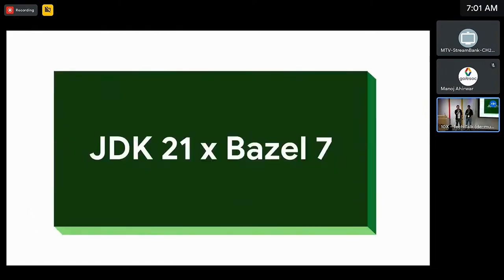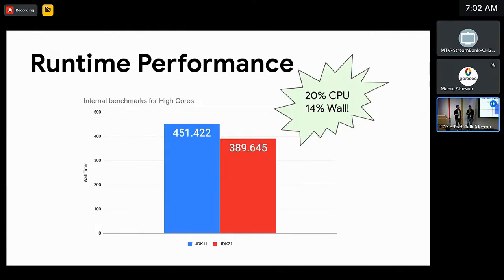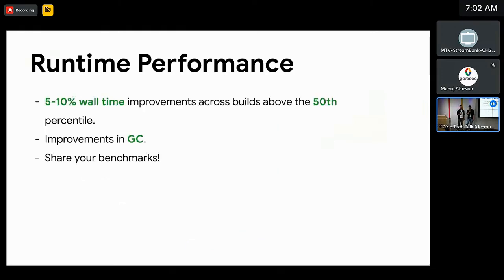As Toby mentioned yesterday, one of the changes we have made in Bazel 7 is we have finally upgraded the embedded JVM to 21 from 11. We have been benchmarking the performance implications of this upgrade and seen some quite promising results. From our internal benchmarks, we've seen improvements of up to 20% for CPU and 14% for wall time. However, this was only for high-core machines — we didn't see improvements in low-core machines. In some of our experiments in production, we've seen a 5% to 10% wall time improvement across builds above the 50th percentile.